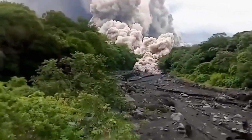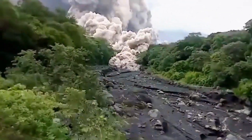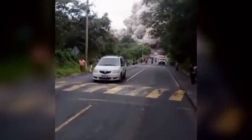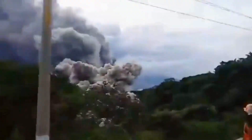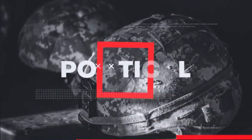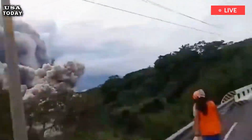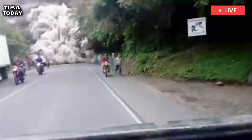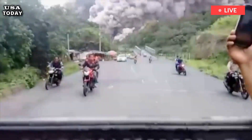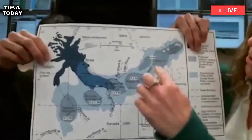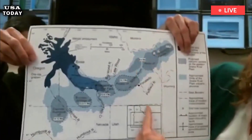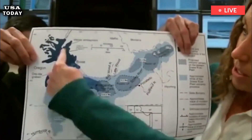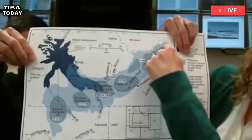Yellowstone Volcano: Eruption map shows nowhere is safe from volcanic blast. Yellowstone Volcano will spare no one the horror of eruption when it blankets the United States in ash from coast to coast, terrifying Yellowstone eruption maps reveal.